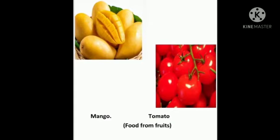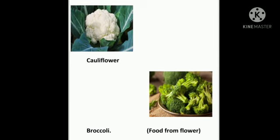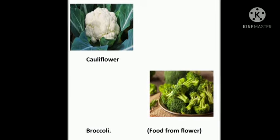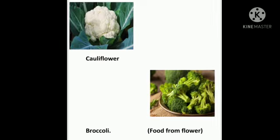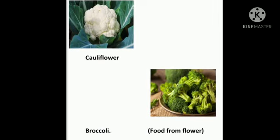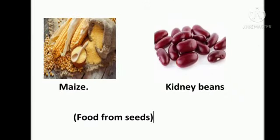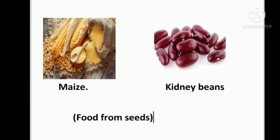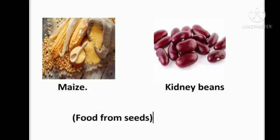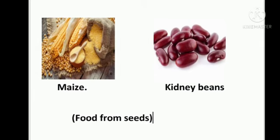This is cauliflower and broccoli, and we get these foods from the flower. The last one is maize and kidney beans. Maize and kidney beans — from which part of the plant? From seeds. We get maize and kidney beans from seeds.